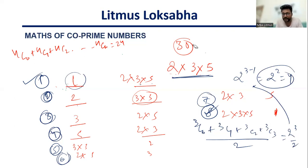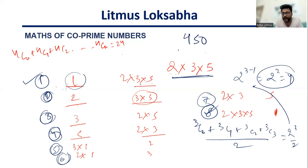If this is clear, can you all tell me what will be the number of ways in which you can express 450 as a product of two co-primes? Thank you so much. See you in the next one.